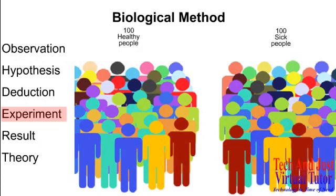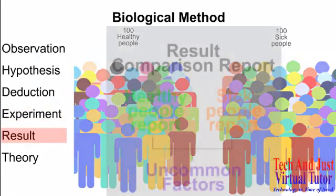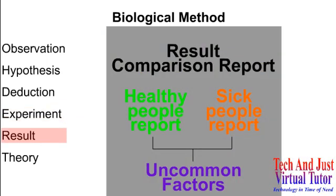You can understand that this experiment was being conducted to check if the deduction is true or not, means that healthy people should not have plasmodium in their blood. Now, since the experiment is being conducted, then obviously the following step would be the result where all the reports of blood tests are put together and the final answer is concluded.